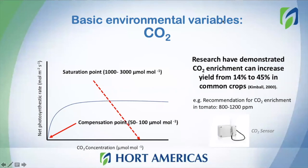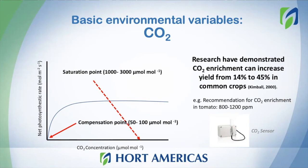Another important variable is CO2. CO2 is very related to photosynthesis. On the x-axis we have CO2 concentration, and on the y-axis we have the net photosynthetic rate. Ambient levels of CO2 are around 400 ppm, which can be good for plant growth and development. But we also know that if we enrich our system with CO2, we can improve plant performance. Research has demonstrated that increasing CO2 levels can increase yield by 14 to 45% in common crops, but to achieve this you should increase levels from 400 ppm to 1000 ppm.